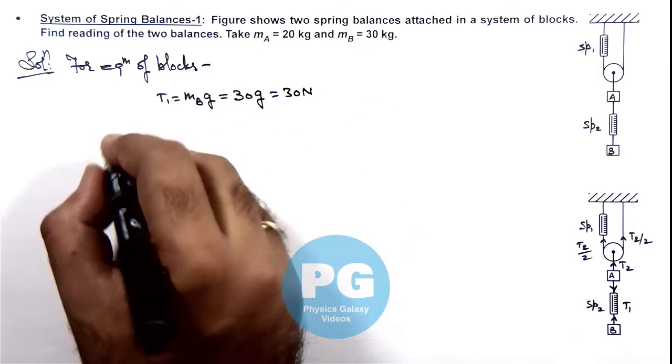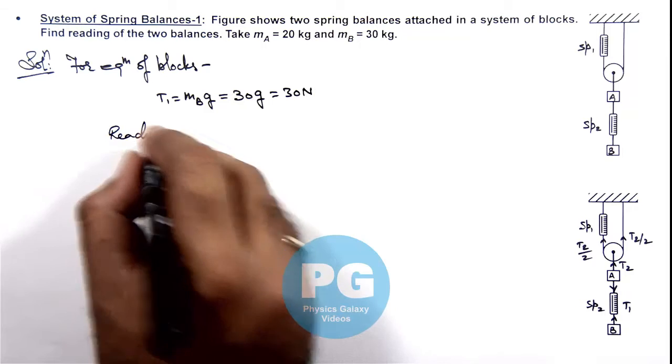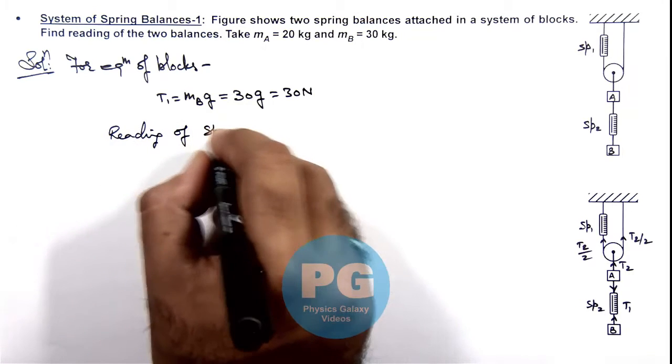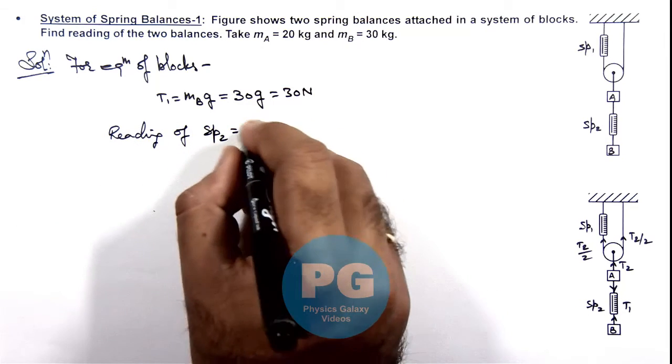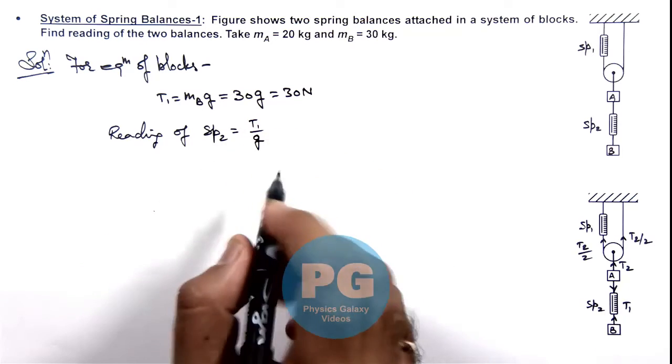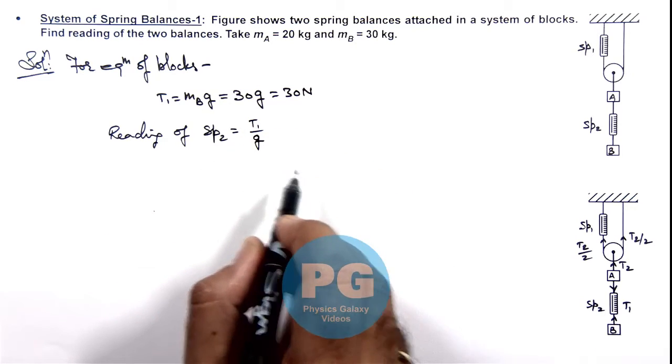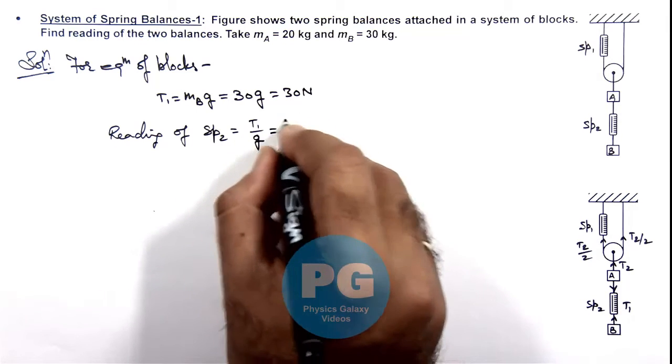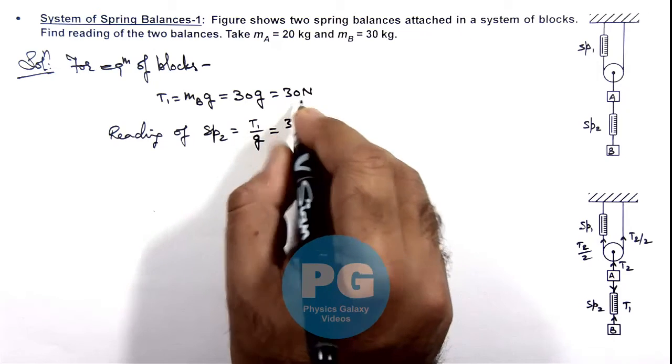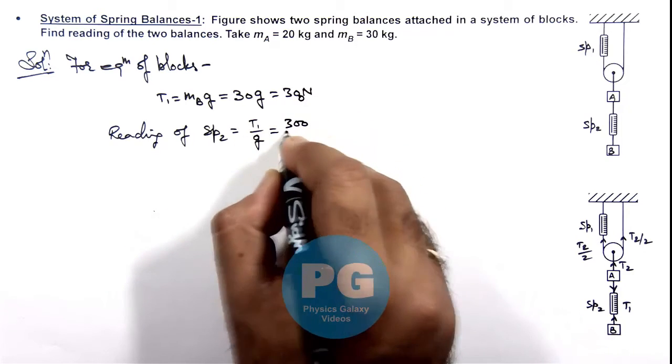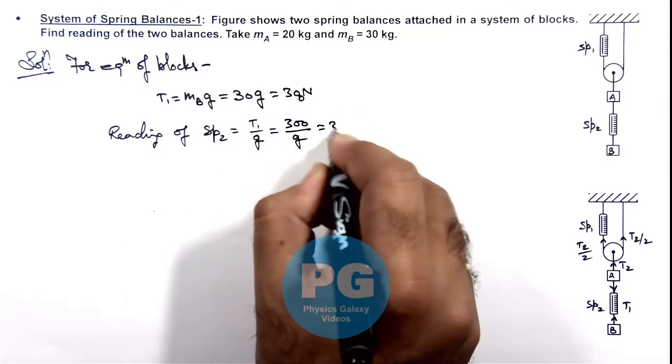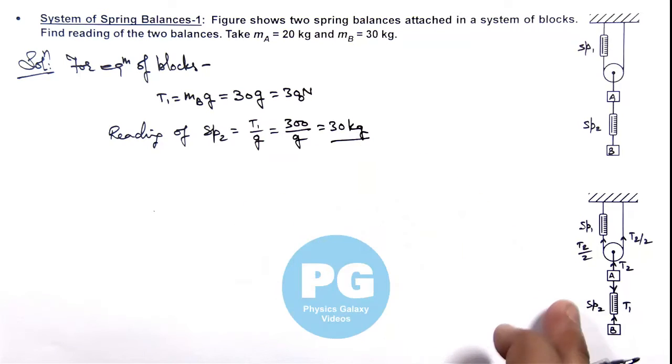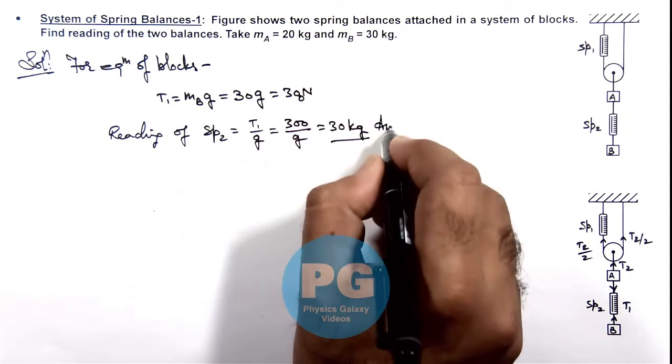So if we calculate the reading of SP2, this can directly be written as T1 by g because a spring balance reads the tension in string in kilogram force. So here T1 by g we can write as 300 newton divided by g, so this will be 30 kg. So spring balance 2 will read the value of actual weight of block B that is 30 kilogram. This is one answer for this problem.